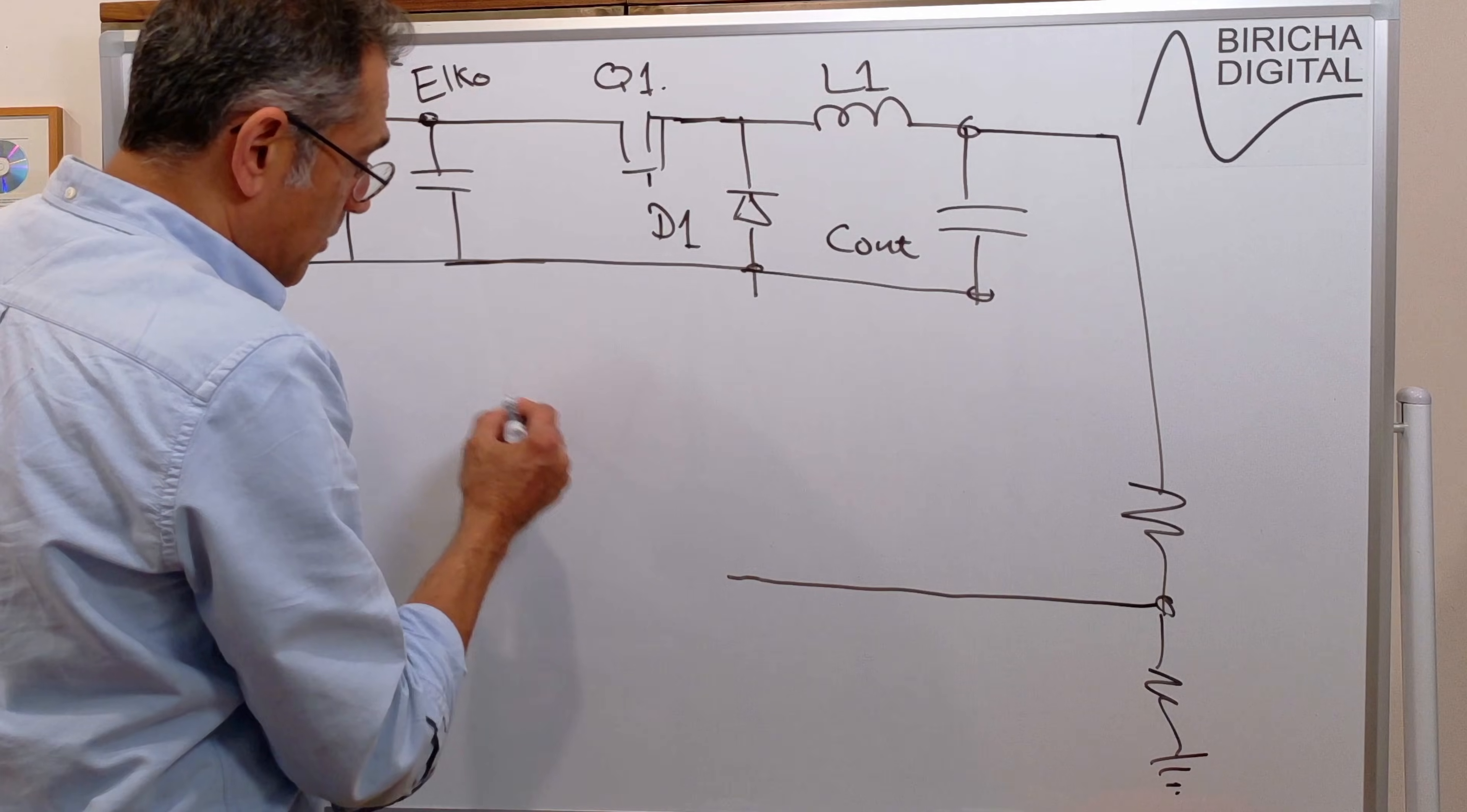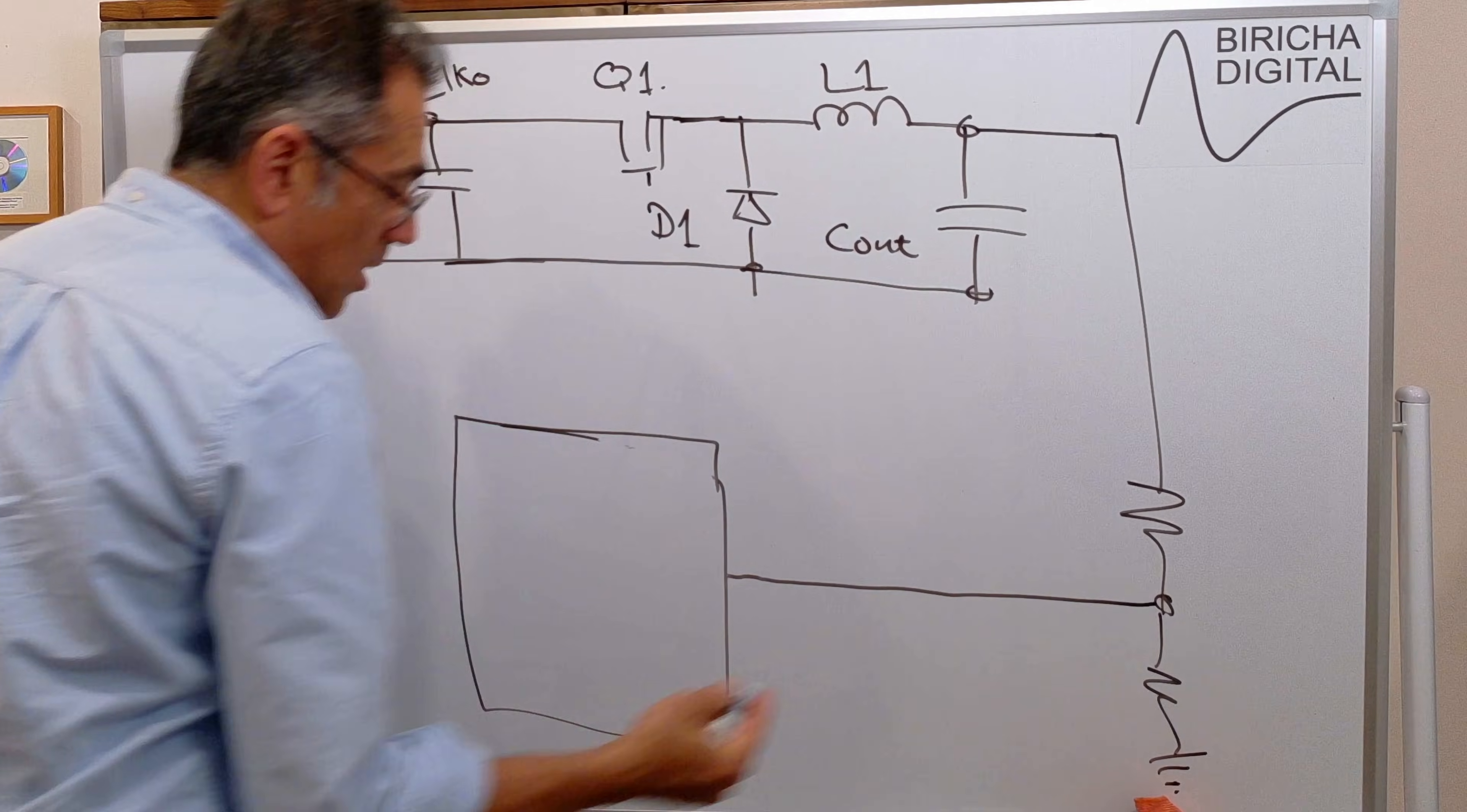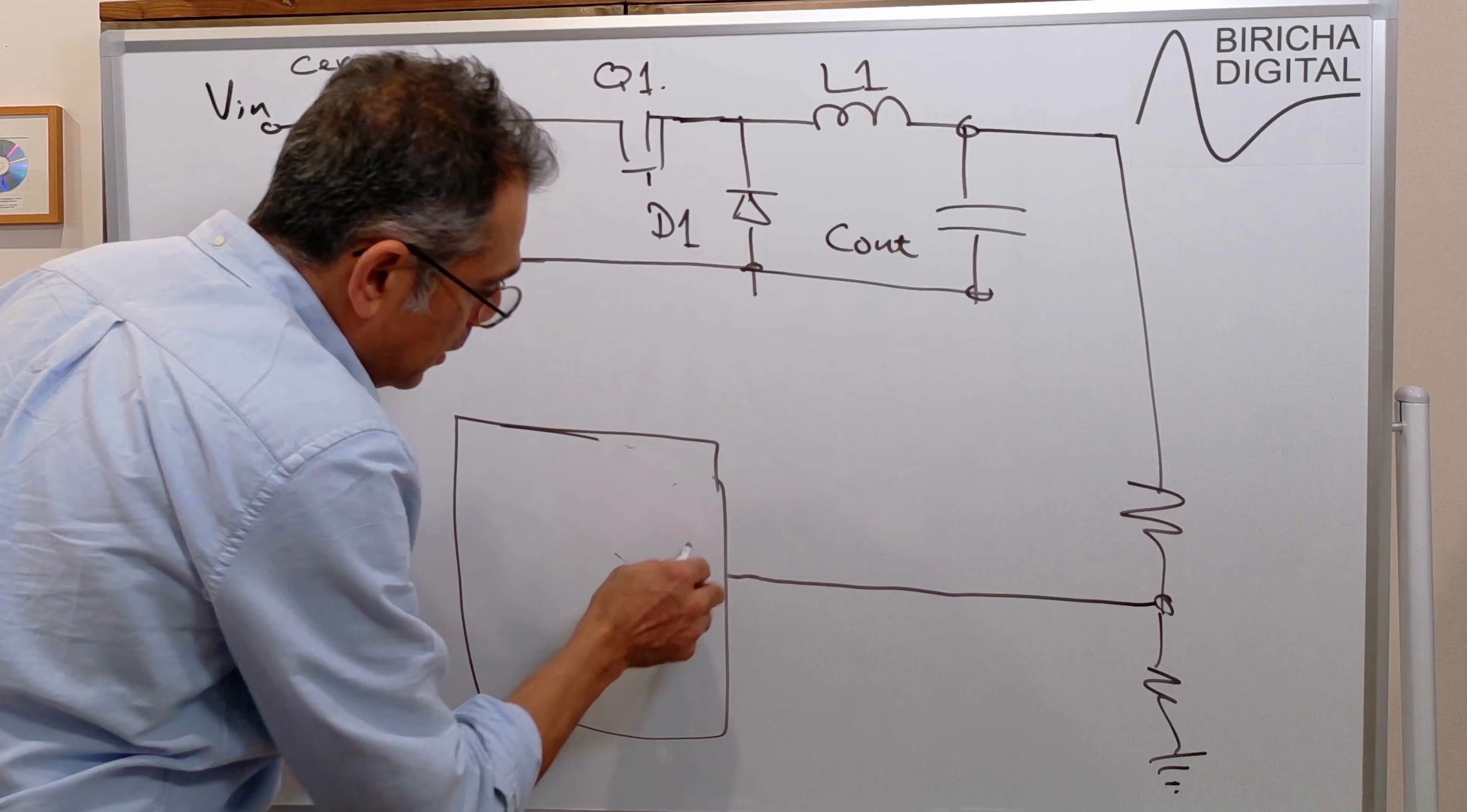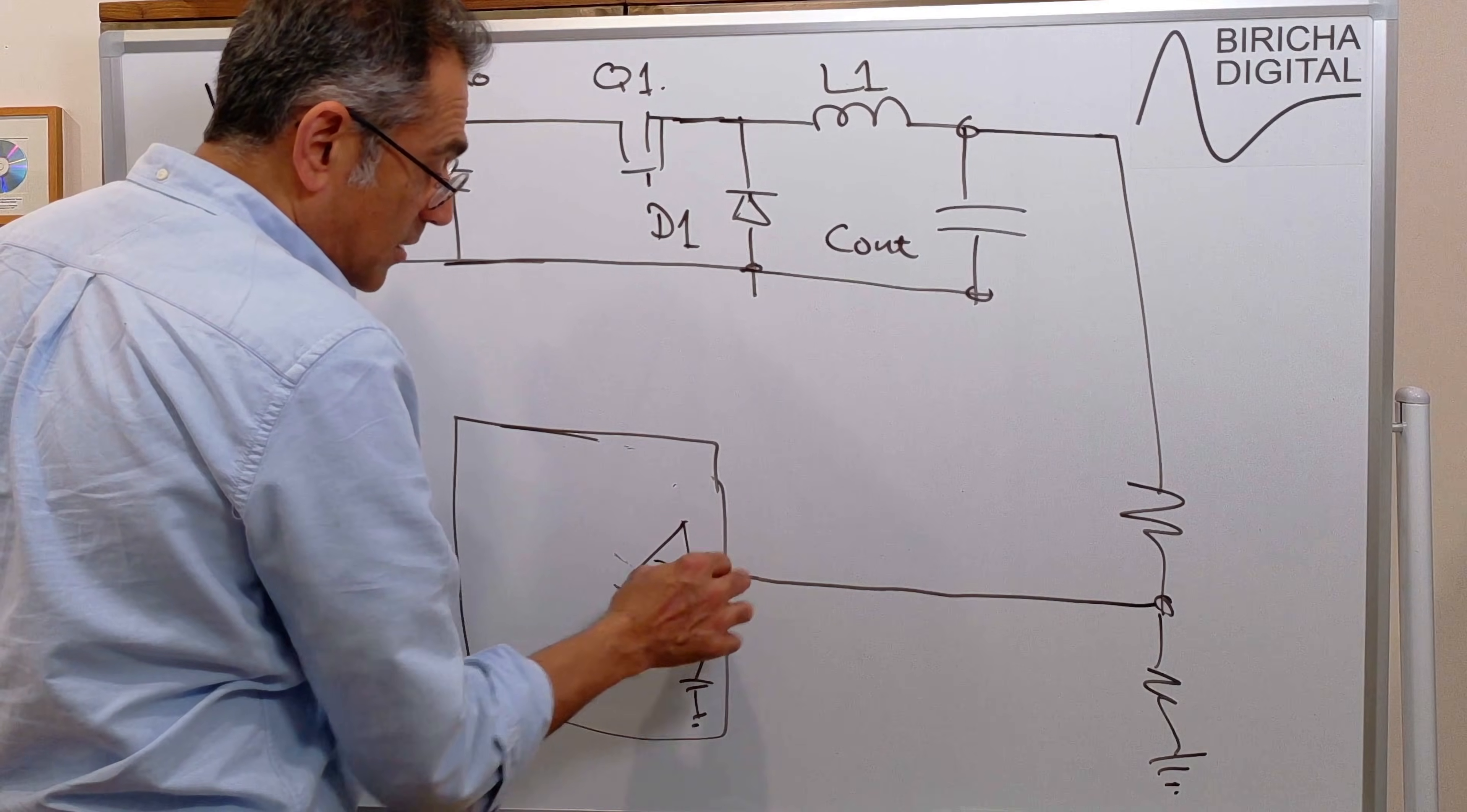Now inside of our PWMIC, there is usually an operational amplifier, which we use to do our compensator. So let us draw this operational amplifier here. Oops, not there. Now internally, this is usually tied to an internal reference. That's the non-inverting pin. That is the inverting pin.